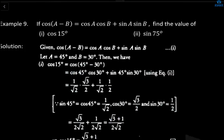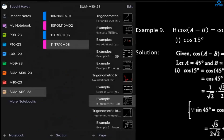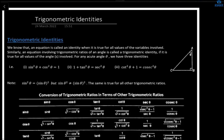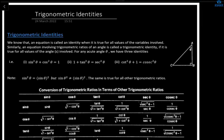Now we move to the last topic of this trigonometry chapter — trigonometric identities. After finishing this chapter, we will start the application of trigonometry, which covers height and distance. Identities are formulas we are going to study. In class 10, there are three main identities, and from these you can derive many more.